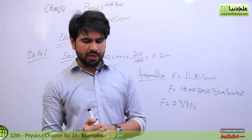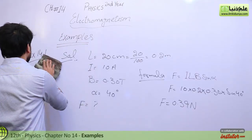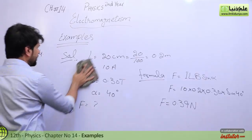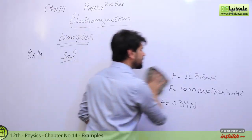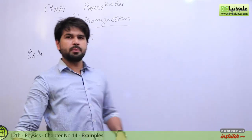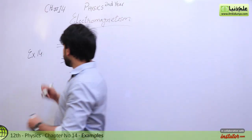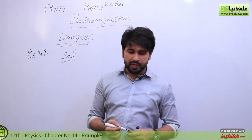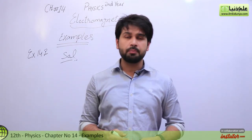Use a scientific calculator to compute the answer. Now moving to example 14.2. The statement of 14.2 is: the magnetic field in a certain region is given by B in vector form.